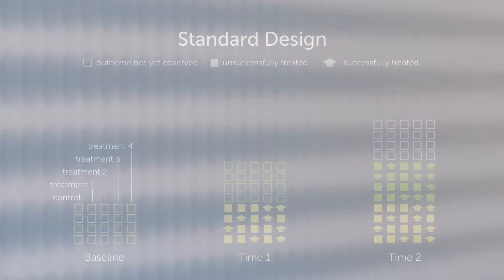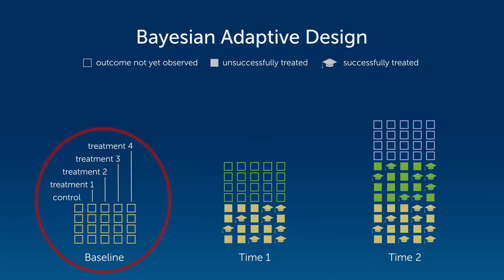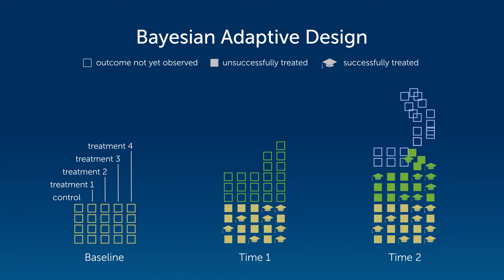The key innovation of adaptive design is that the randomization scheme adapts to accumulating evidence. For example, in a standard design, students from each cohort are randomized with equal probability to each of the five arms. With Bayesian adaptive design, students from the first cohort are randomized with equal probability to each of the five arms, but subsequently, as evidence accumulates, more students are randomized to the most promising treatment arms.